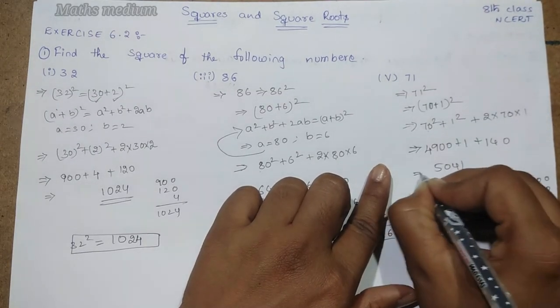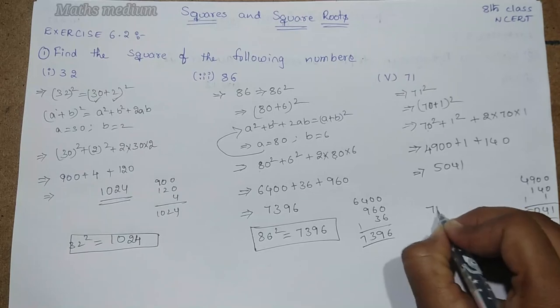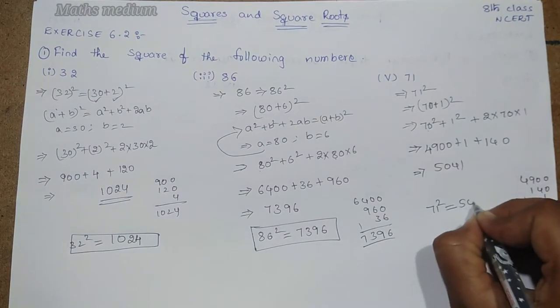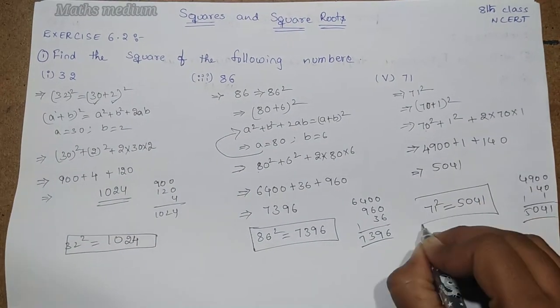5041 is the square of 71. So 71 square is equal to 5041 is the answer for this question.